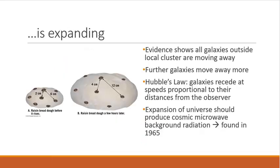The universe is expanding. So evidence shows that all the galaxies outside our local cluster are moving away from us. So this tells us that the universe is constantly expanding. The further away a galaxy is, the faster it moves away. So that's actually Hubble's law, that galaxies will recede at a speed that's proportional to their distance from the observer. So the further away they are, the further they will get.